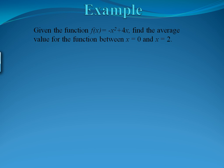Let's look at some examples to see how this works. So let's say that our function, f of x, is negative x squared plus 4x, and we want to find the average value of the function between x equals 0 and x equals 2.